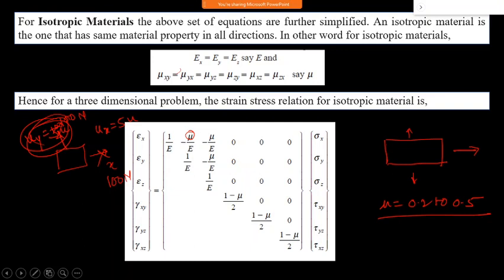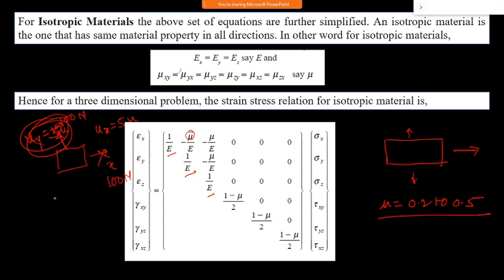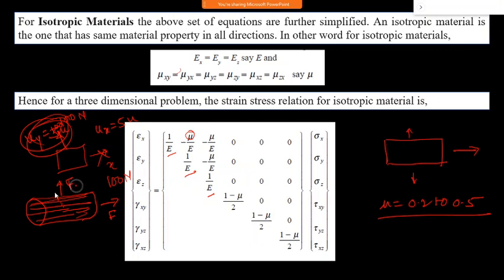For an isotropic material, Young's modulus E and Poisson's ratio mu are the same in all x, y, z directions. In contrast, wood is an anisotropic material - it has fibers in the axial direction and takes more force in one direction; in the transverse direction, much less force is needed to separate the fibers, causing greater deformation for the same applied force.